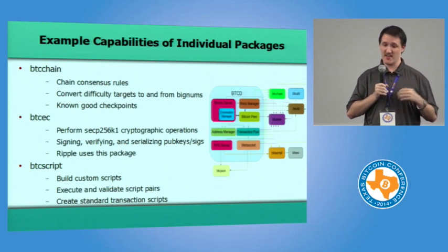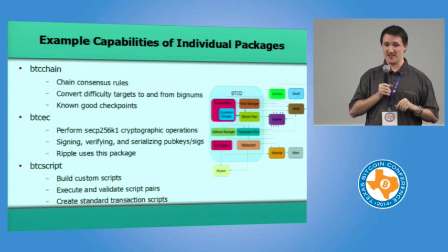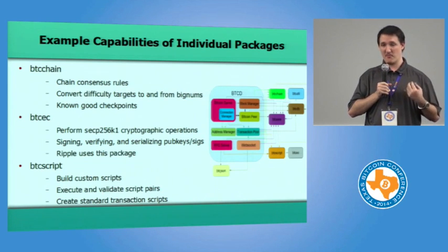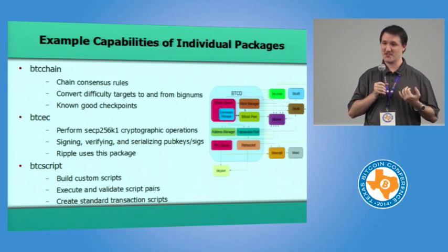The next package is the EC package — EC stands for elliptic curve. It implements all the cryptographic primitives that comprise Bitcoin: signatures, public keys, the ability to create and verify them, and serialize them. In transaction scripts, public keys must be serialized to create the script, and this package handles all of that. In fact, Ripple uses this package in their node to interface with Bitcoin.